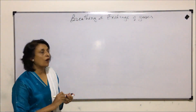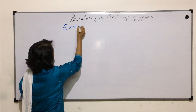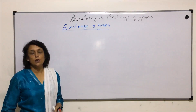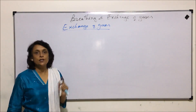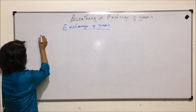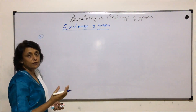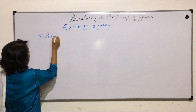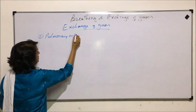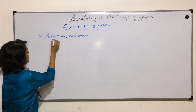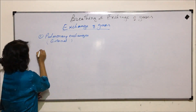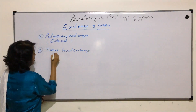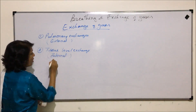Let us now talk about exchange of gases. During breathing, oxygen-rich air reaches the alveoli and that is where the exchange starts. Exchange of gases takes place at two levels: pulmonary gaseous exchange, which is between the air and the blood or alveoli and the blood vessel, and the second is at tissue level. The first is also known as external respiration, and the second is known as internal respiration or internal gaseous exchange.